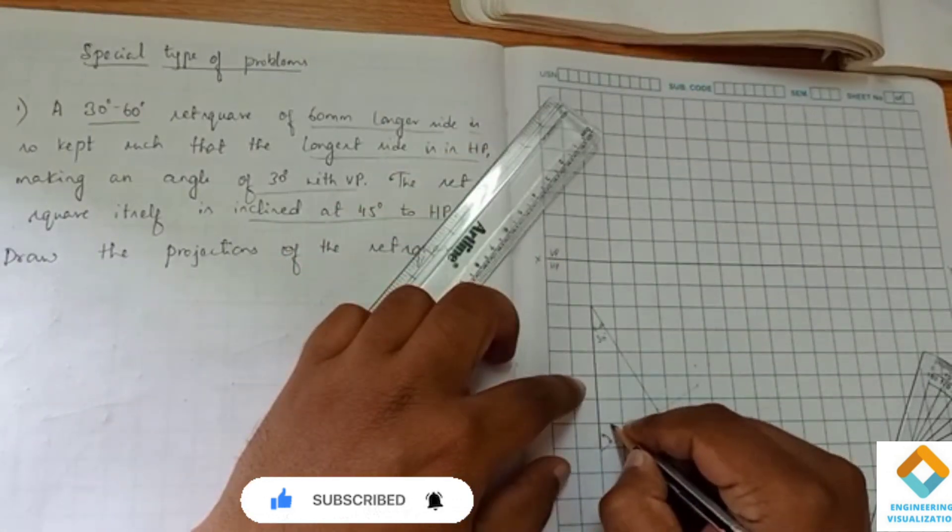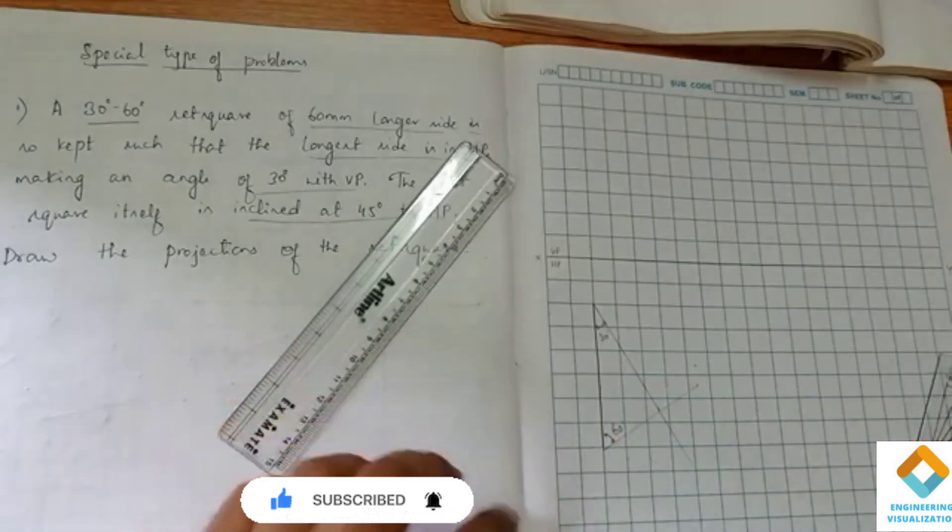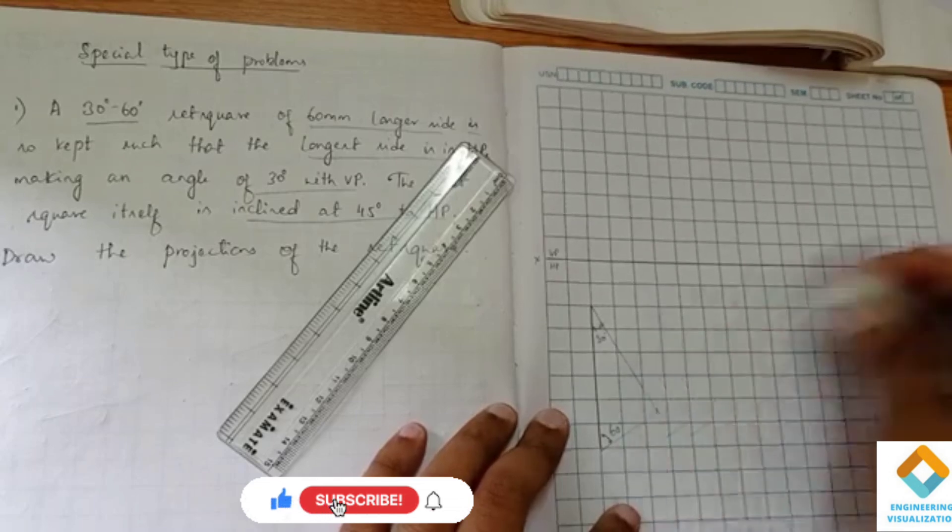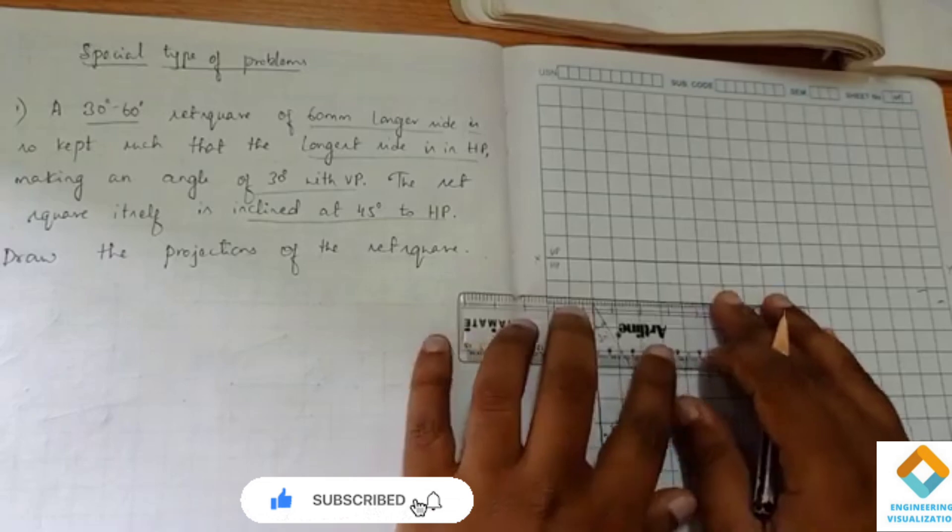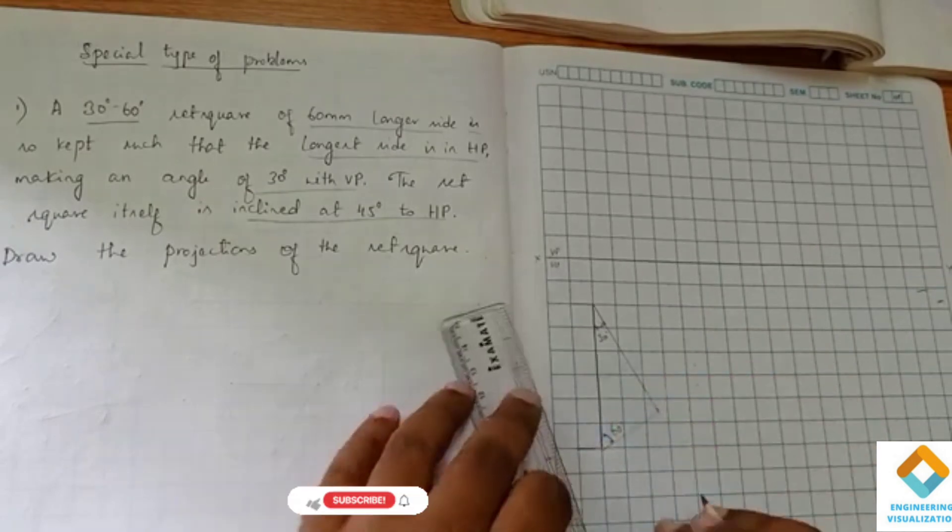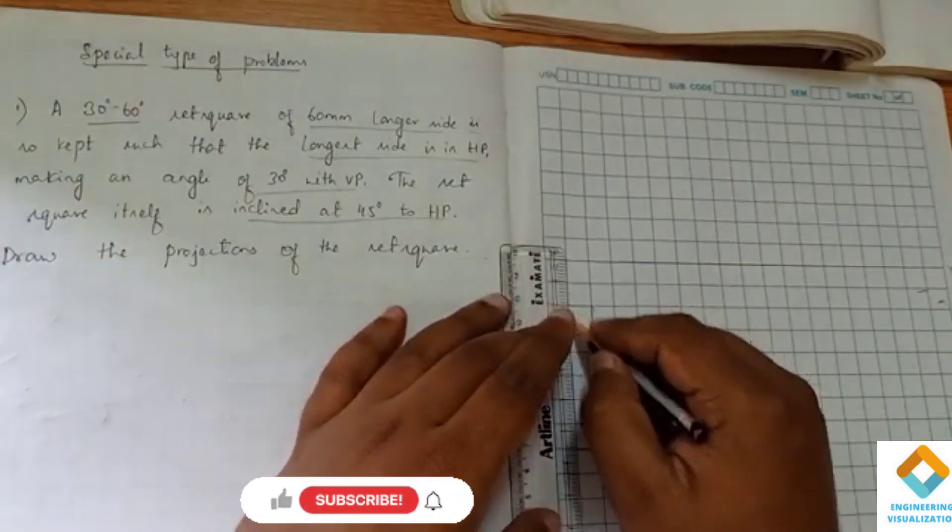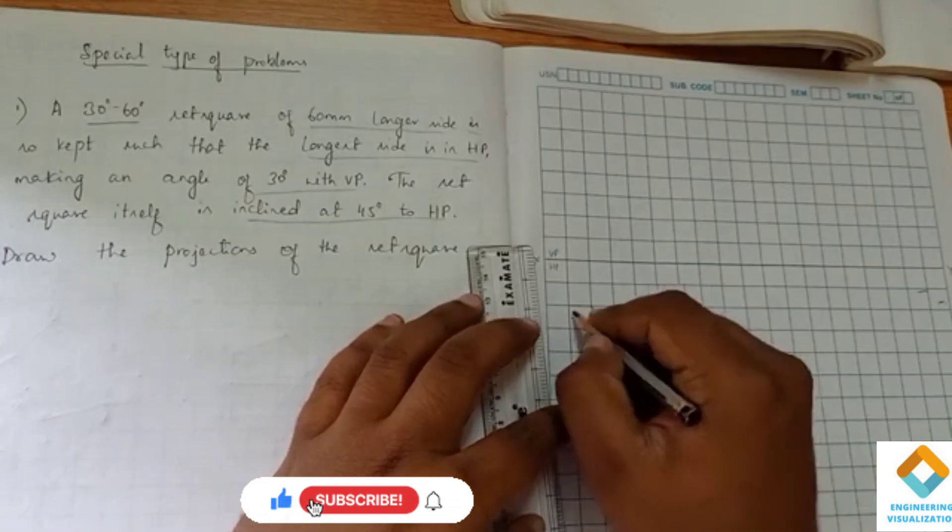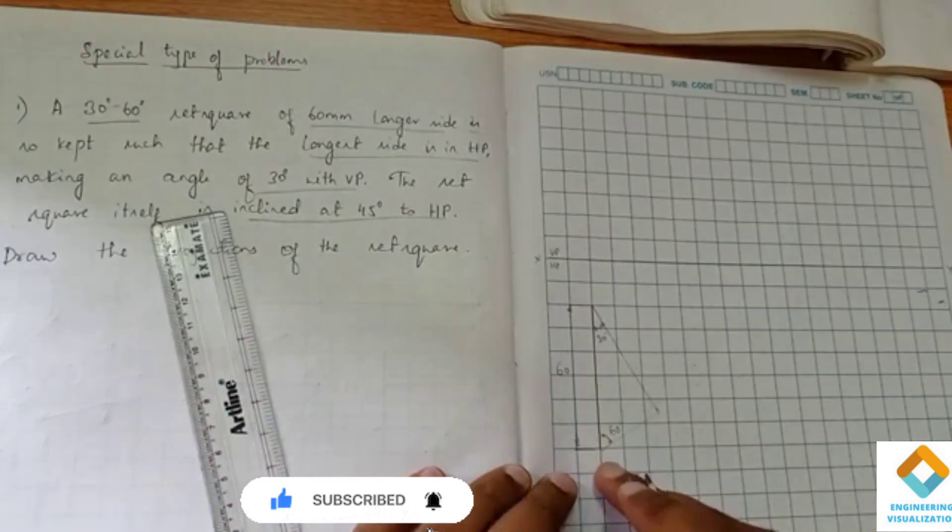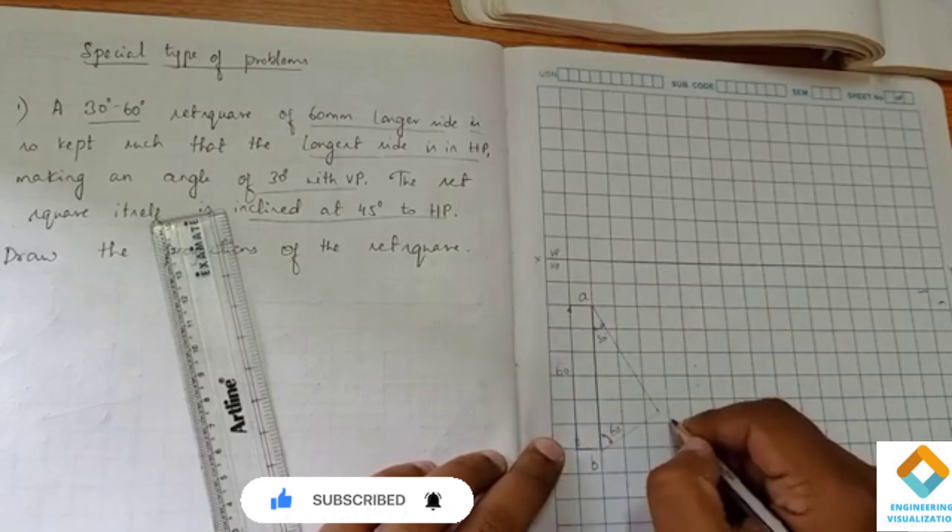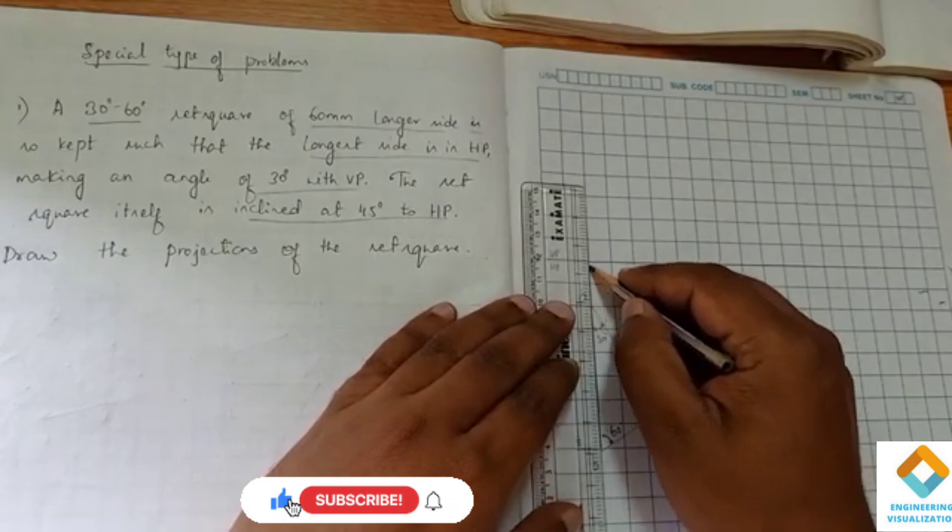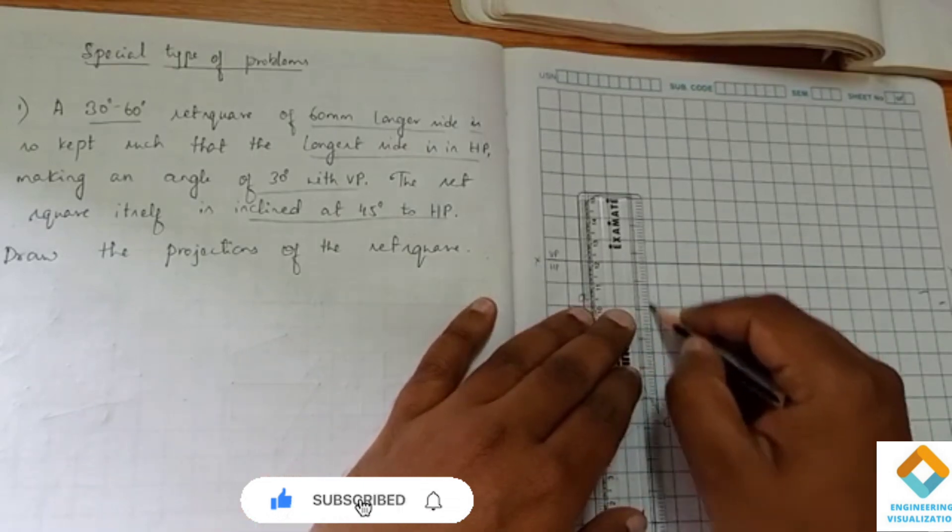This angle is 60, so this is the 30 degree, 60 degree set square. We have drawn it with respect to the question given. We will be showing the dimension - 60. We have drawn with respect to the longer side and we will be giving the naming for it: A, B, C. To project it, we complete the front view.